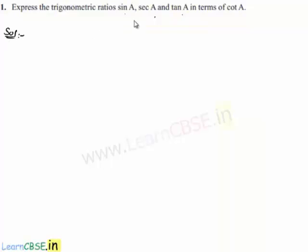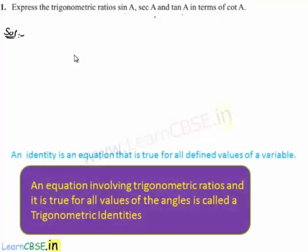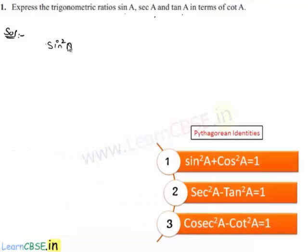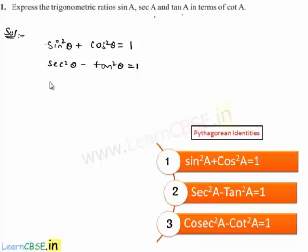In order to express one trigonometric ratio in terms of another, we have three identities: sine squared theta plus cos squared theta equals 1; secant squared theta minus tan squared theta equals 1; and cosecant squared theta minus cot squared theta equals 1. By using these three identities, we can convert one trigonometric ratio into another.